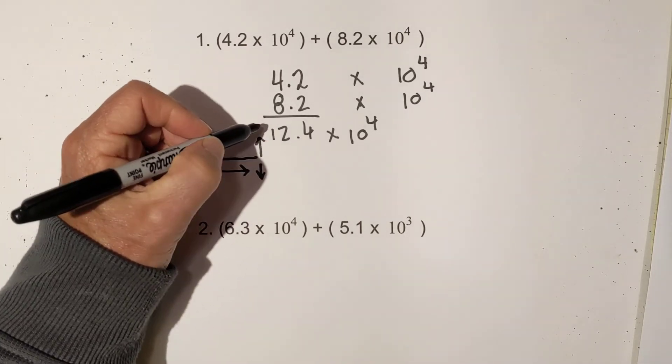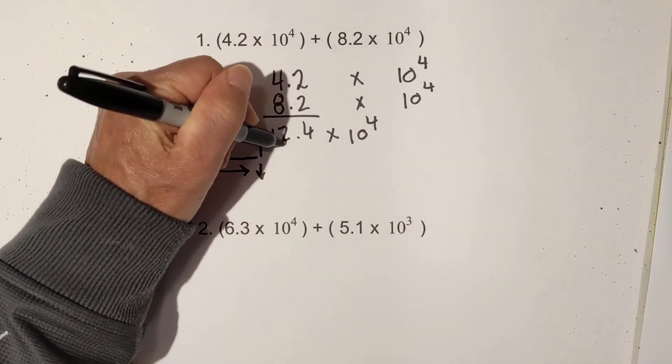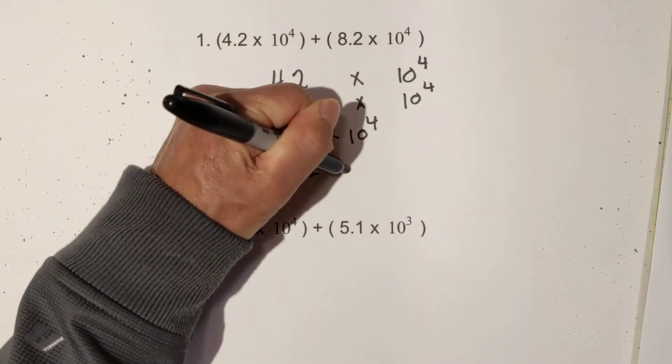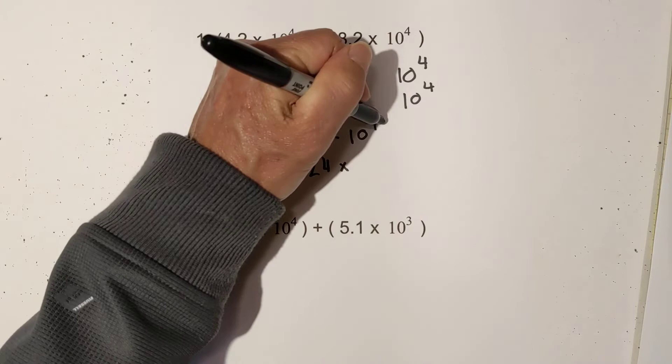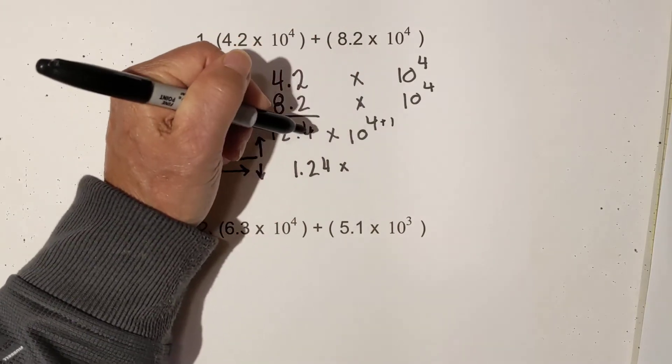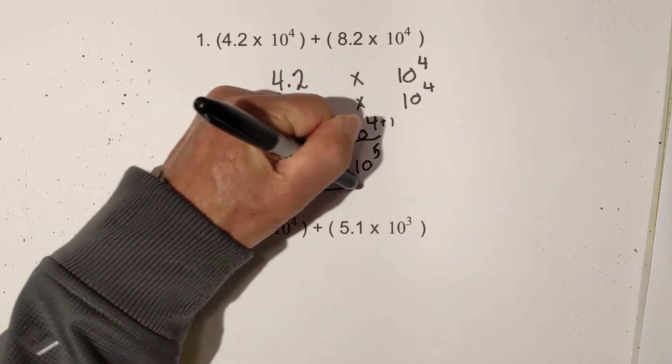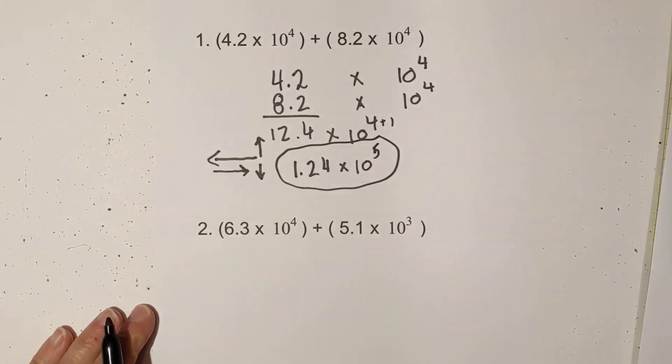So since the number is actually getting smaller, I will move it one place to the left. So it becomes 1.24. And then I add 1 to the 4 because I moved it one place. So it becomes 10 to the fifth. So there is the first problem.